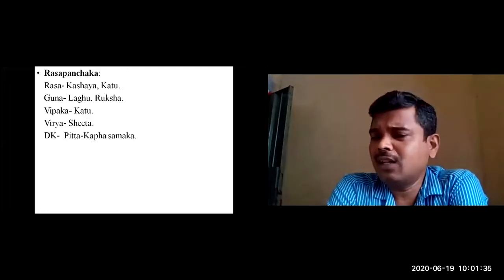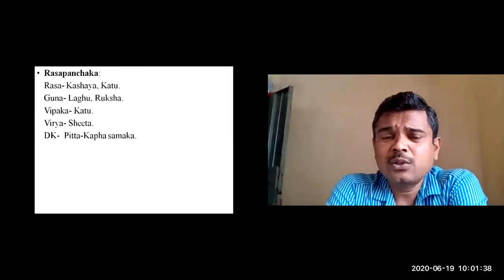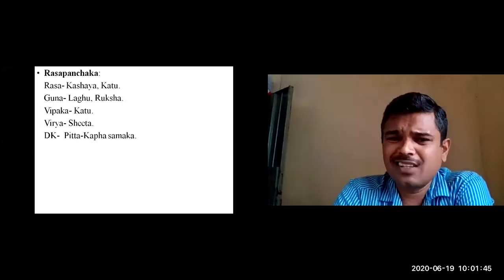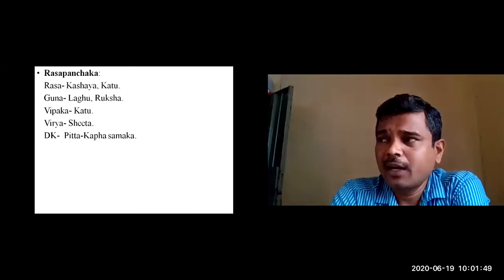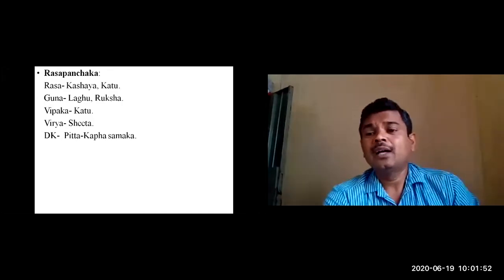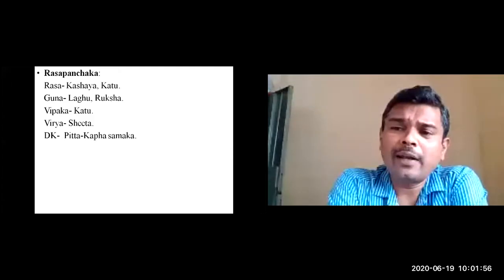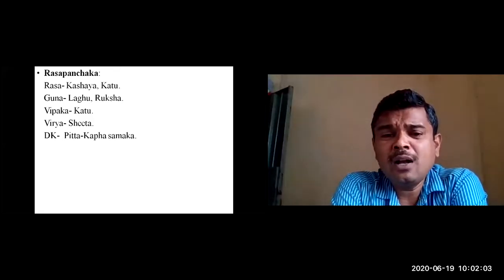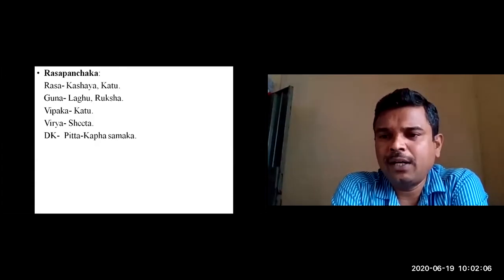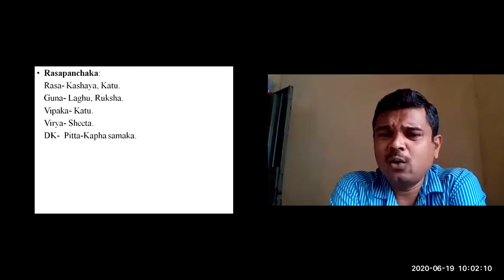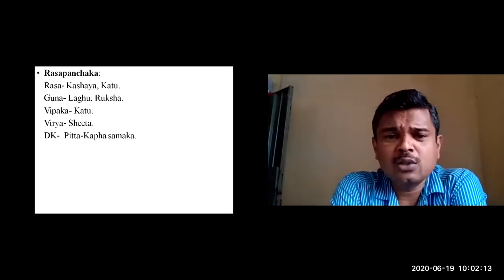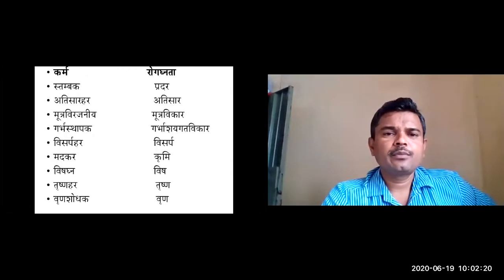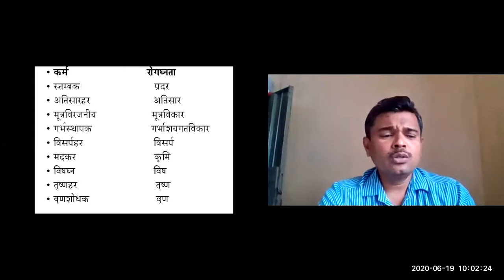Regarding Rasa Panchaka there is a difference of opinion among the Acharyas and Nighantukars. Some say it is similar to Arjuna as a Samana Pratyaya drug, while some Acharyas also mention Katu rasa as an anurasa. The accepted properties are: Kashaya rasa, Laghu Ruksha guna, Sheeta virya, Katu vipaka — this is also correct.